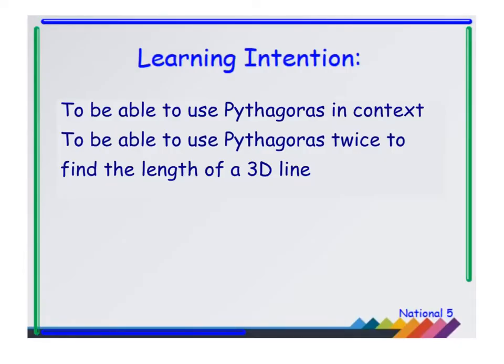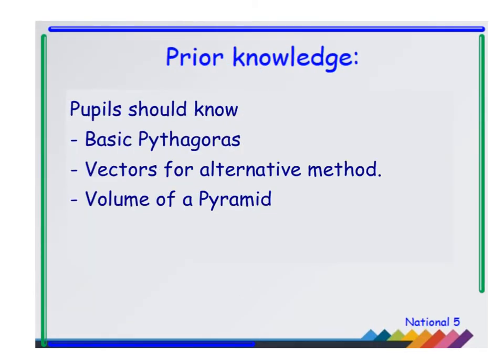The learning intention is to be able to use Pythagoras in context, to be able to use it twice and find the length of a 3D line. Prior knowledge is you should be aware of basic Pythagoras. It would be ideal if you'd already seen vectors as well, because that allows an alternative method which I'm going to show you in example three. Hopefully you've all seen volume as well, because volume of a pyramid will involve a bit of 3D Pythagoras, and that's my example two.